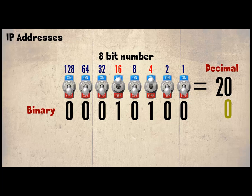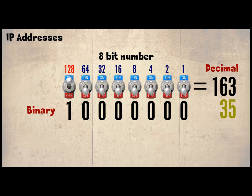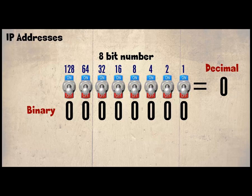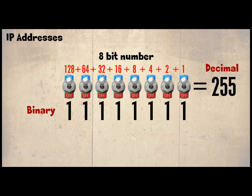Let's find the binary equivalent of 163. We start with the far left switch and subtract 128, leaving 35. We cannot subtract 64, but we can subtract 32, leaving 3, so the next two switches are left on. Only this combination of 0s and 1s will result in decimal 163. So what is the largest 8-bit number we can have? Switch all switches to the on position and add all the numbers together, resulting in 255.